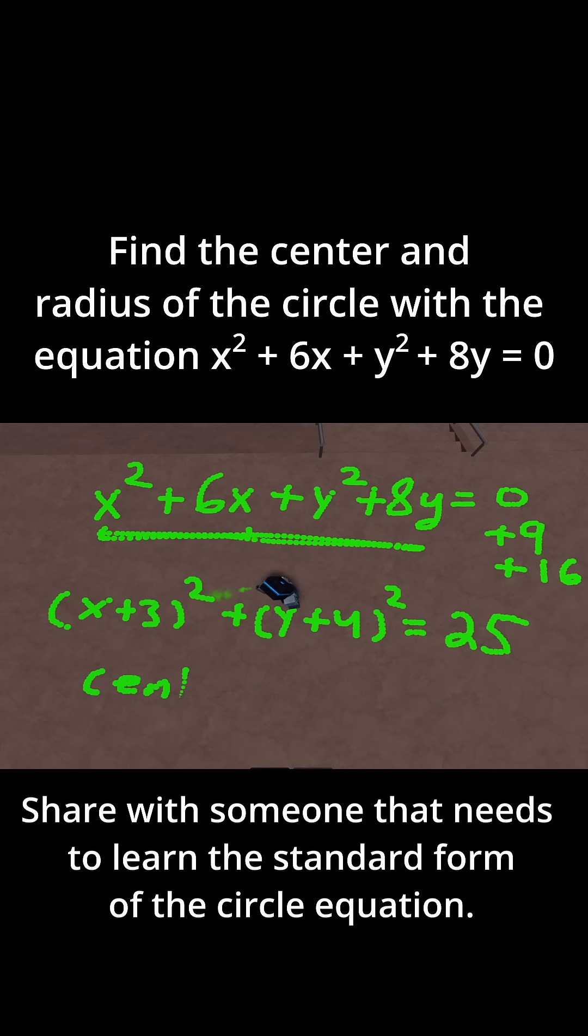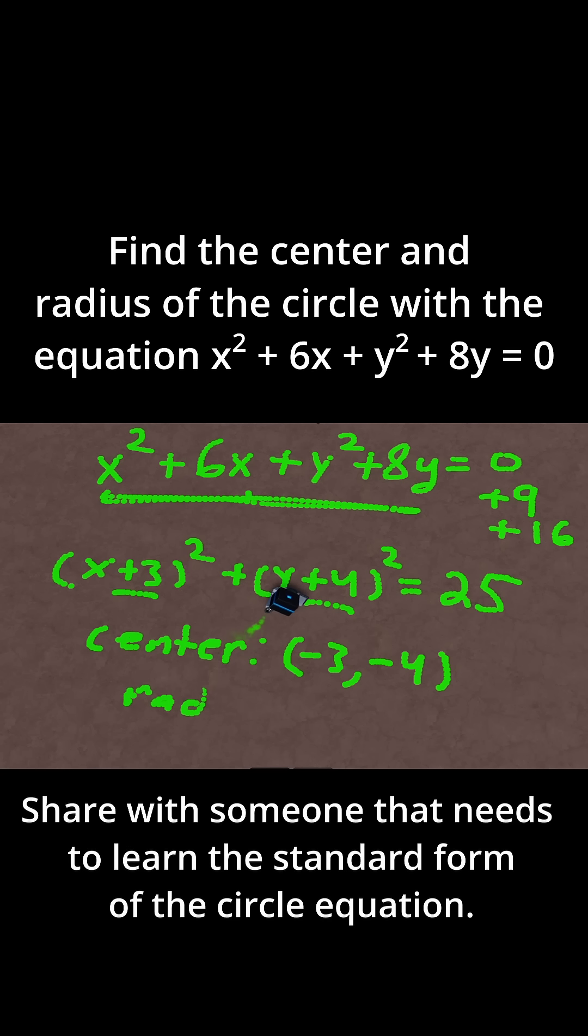So this is quite simple. For the center, remember, you just take the numbers inside the parentheses and flip them. So you have plus 3 and plus 4. That becomes minus 3 minus 4 as your center. And then for the radius, remember, this thing is equal to r squared. So just take the square root of that number. So take the square root of 25 and that is equal to 5. So 5 is the radius of the circle and the center is minus 3 comma minus 4.